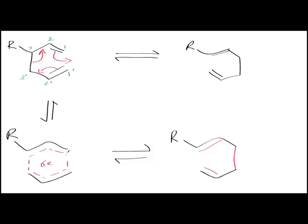6 electrons, sorry, in the transition state. So it's an aromatic type of transition state, so it's very stable. And it rearranges back like that.